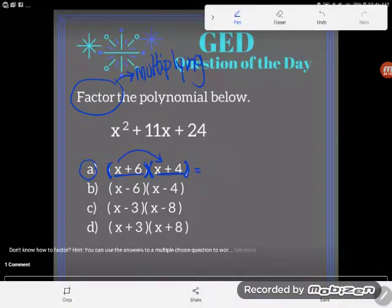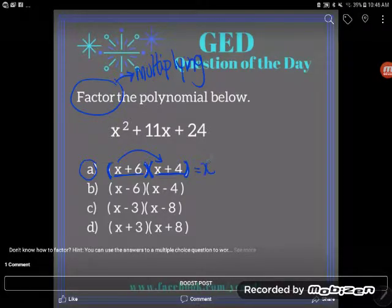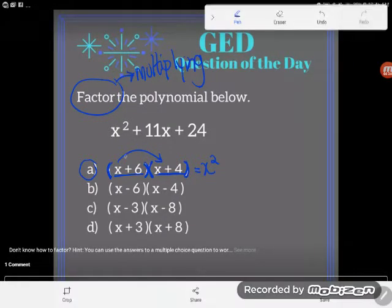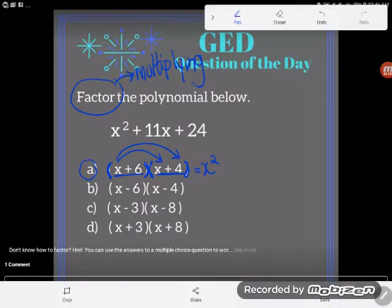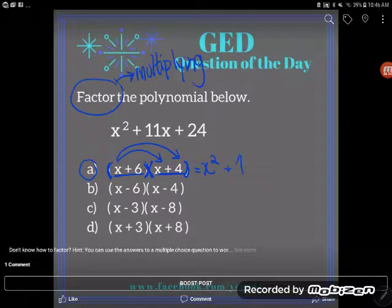So first I'll multiply my first term by my first term, x times x. Two x's multiplying is the same as x squared. Now I'll multiply my x with my positive 4. You might say, Kate, that's a plus 4. Yeah, it's a plus 4 when I'm adding, but when I'm multiplying I think of it as a positive 4. So positive 4 times x or x times positive 4 is just positive 4x.